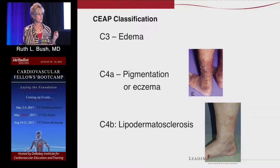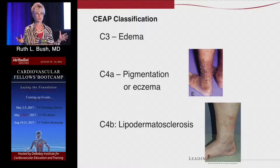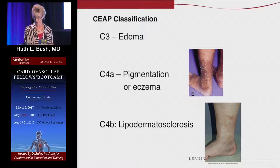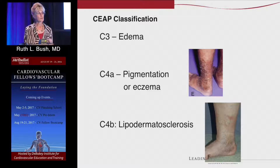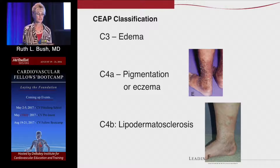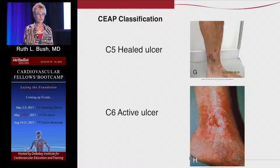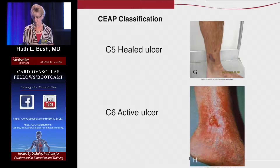The skin starts feeling a little woody, and that's from fibrin deposition. The hypertension in the veins pushes red blood cells and fibrin out into the surrounding tissue, making it stiff. The hemosiderin — as I tell my patients — is a rust stain, because you have red blood cells with iron staining their skin. Those things probably will not improve by fixing their reflux. C5 is a healed ulcer, and C6 is an active ulcer.